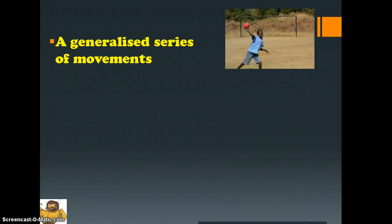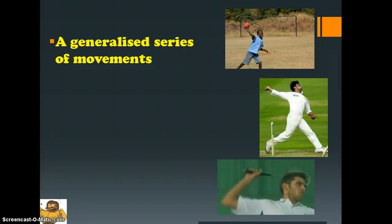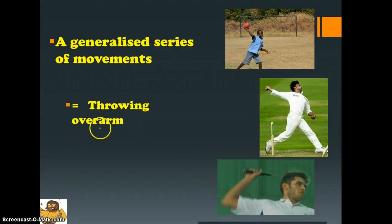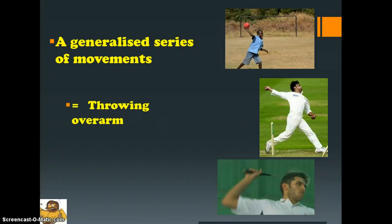Looking at the generalized series of movements — in these three pictures you could suggest that there is a general scheme of the motor program which would be throwing overarm. The first picture shows a relatively simplistic form of throwing; a more complex one would be bowling; and then you could say the smash or the overhead clear. The general scheme from which all three started would have been throwing overarm.